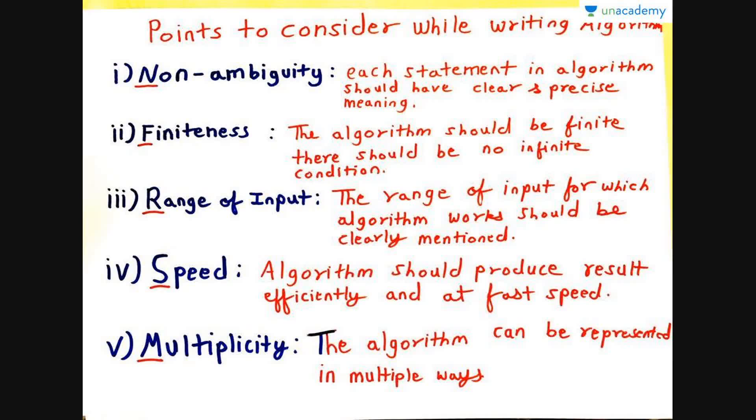Now, there are many points which you have to consider while writing an algorithm. There is a way in which I'll help you remember this. First, let us see what are the points you have to remember. The first condition is non-ambiguity. The meaning of the word ambiguity is being confused. So the statement should not be confusing. Each statement should have a clear and precise meaning for the reader to understand.